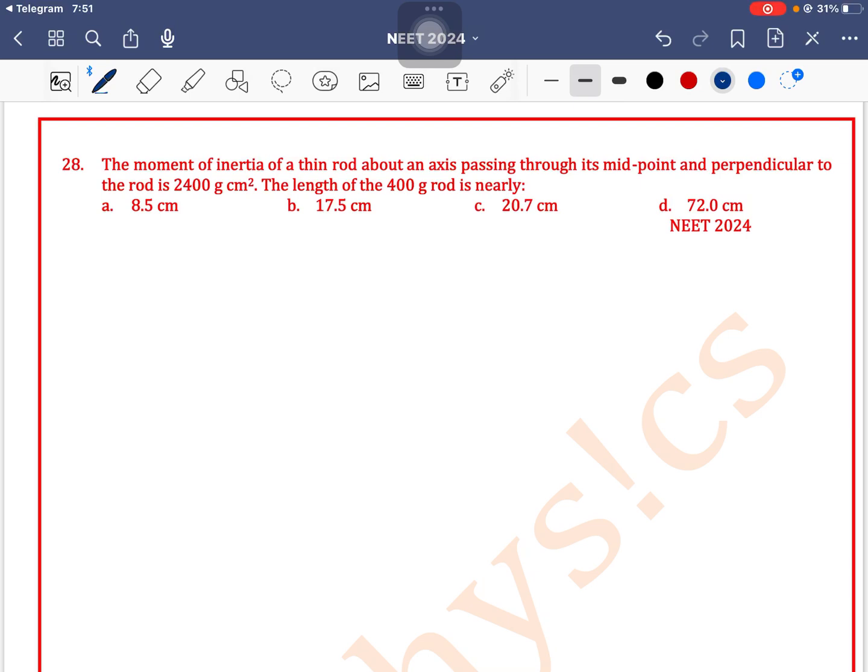The moment of inertia of a thin rod about an axis passing through its midpoint and perpendicular to the rod is 2400 gram centimeter square. The length of the rod is 400 gram. The rod length is nearly what?